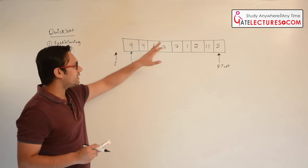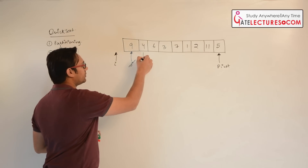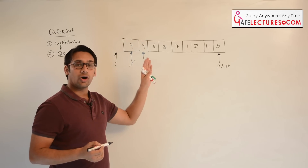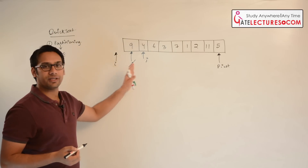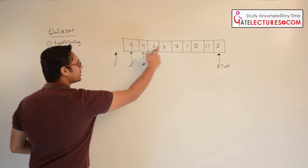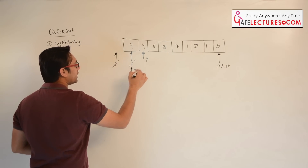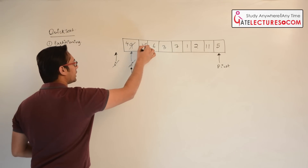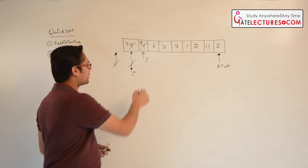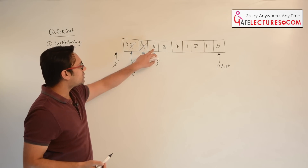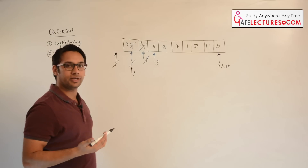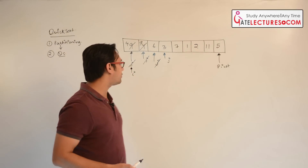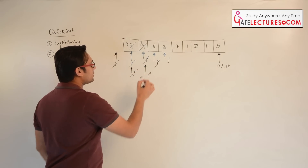9 is greater than 5, so nothing will happen and we just increment j. Now 4 is less than 5. Whenever an element is less than or equal to the pivot element we increment i and swap the values pointed by i and j. So 4 will come here and 9 will come here. Again increment j — now j points to 6. 6 is greater than 5 so we do nothing, just increment j. Now 3 is less than or equal to 5, therefore increment i and swap the values pointed by i and j.